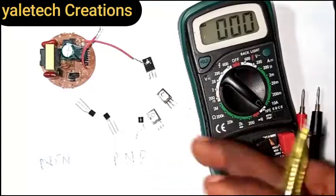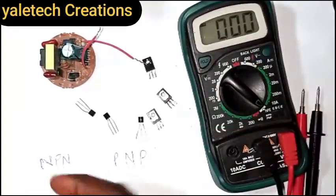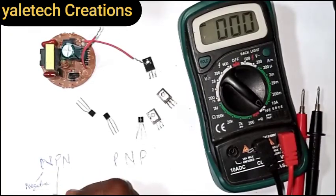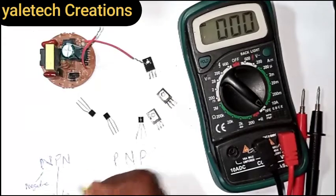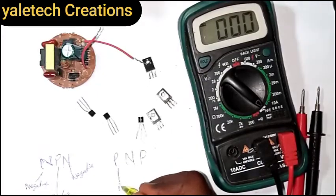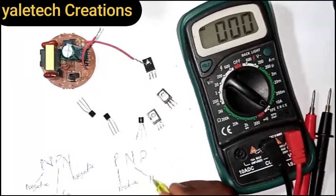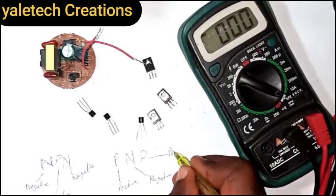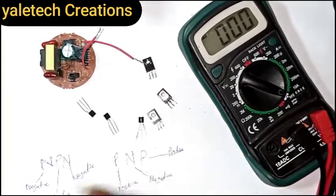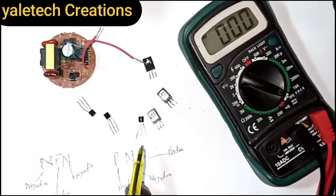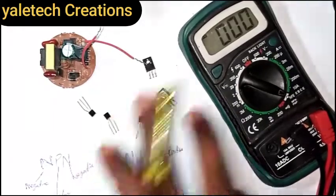Let me explain NPN and PNP. NPN stands for Negative Positive Negative — so the middle pin is positive and the outer pins are negative. PNP stands for Positive Negative Positive — so the middle pin is negative and the outer pins are positive. It's all about polarity.